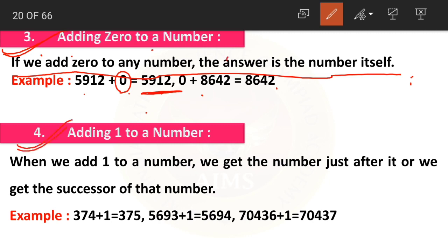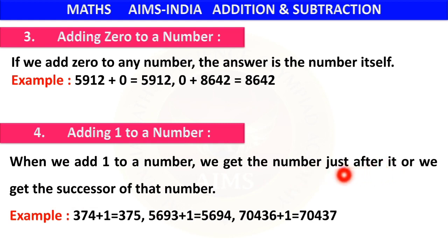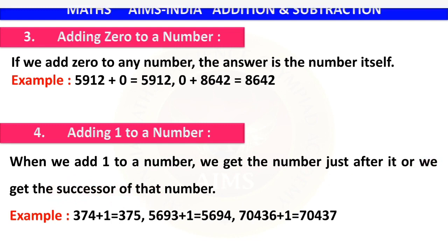The fourth property is adding 1 to a number. When we add 1 to a number we get the number just after it — or in other words, we get the successor of that number. The successor is the number that comes just after a given number, and we find it by adding 1 to the given number.